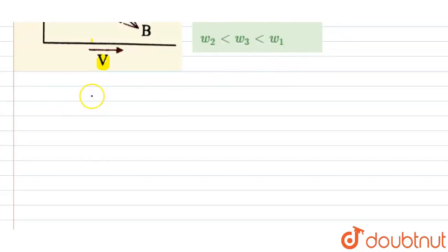So, here see, work done is equals to area under the PV curve.